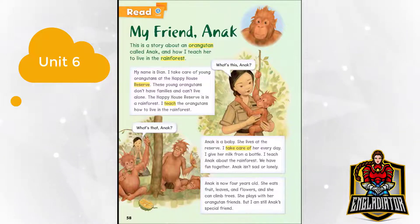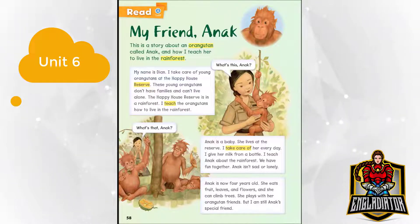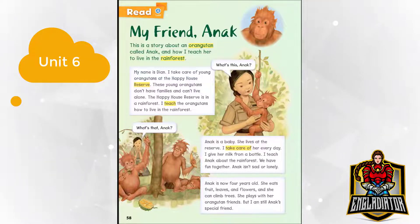I teach the orangutans how to live in the rainforest. Anak is a baby. She lives at the reserve. I take care of her every day. I give her milk from a bottle. I teach Anak about the rainforest. We have fun together. Anak isn't sad or lonely. Anak is now four years old. She eats fruit, leaves, and flowers.